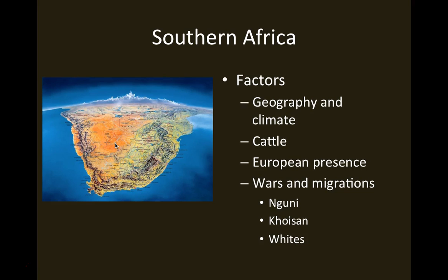Factors in southern African history in this period: the geography and climate are tremendously important. This is a dry climate, and much of southern Africa is a plateau with fairly high elevation. The Drakensberg Mountains run through South Africa, contributing to the formation of societies and cultures of this region. Cattle were tremendously important, and going back many centuries — probably into the first millennium CE — we have chieftains based on the ownership and raising of cattle.